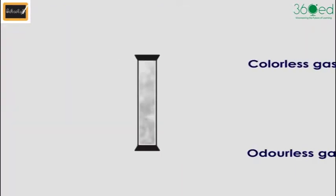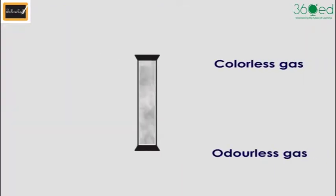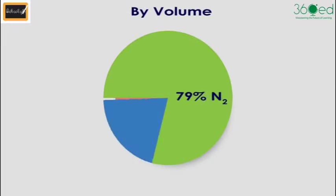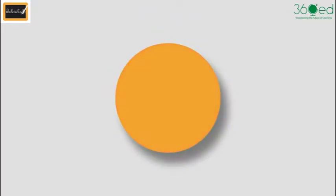Nitrogen and Haber Process. Nitrogen is a colorless and odorless gas. The atmosphere is mainly composed of nitrogen, 79% by volume or 76% by weight of the air.